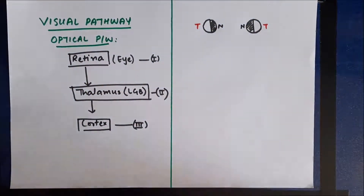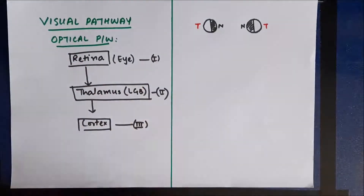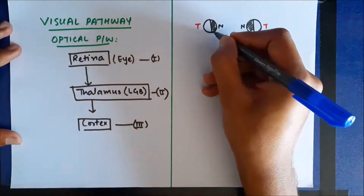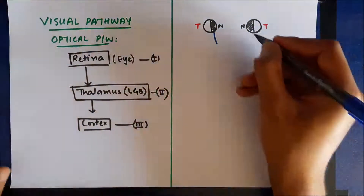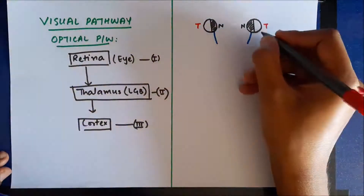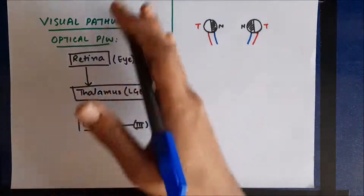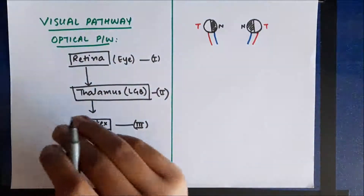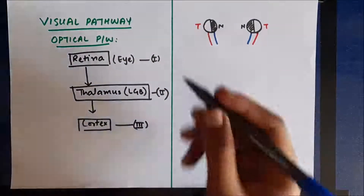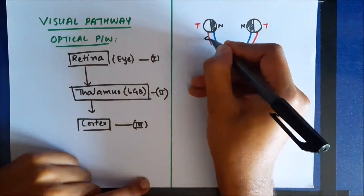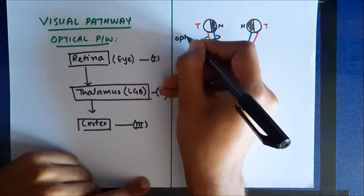As we studied, in the retina the axons of the ganglion cells go out of the retina in the form of the optic nerve. These are the fibers of the optic nerve. Some fibers come out from the nasal side and some fibers come out from the temporal side.